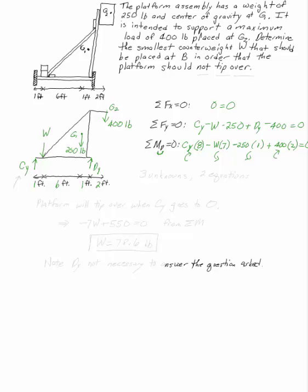DY doesn't show up because it goes through the point I'm taking the moment about. This gives me three unknowns, CY, DY, and W, and two useful equations, which is not enough.